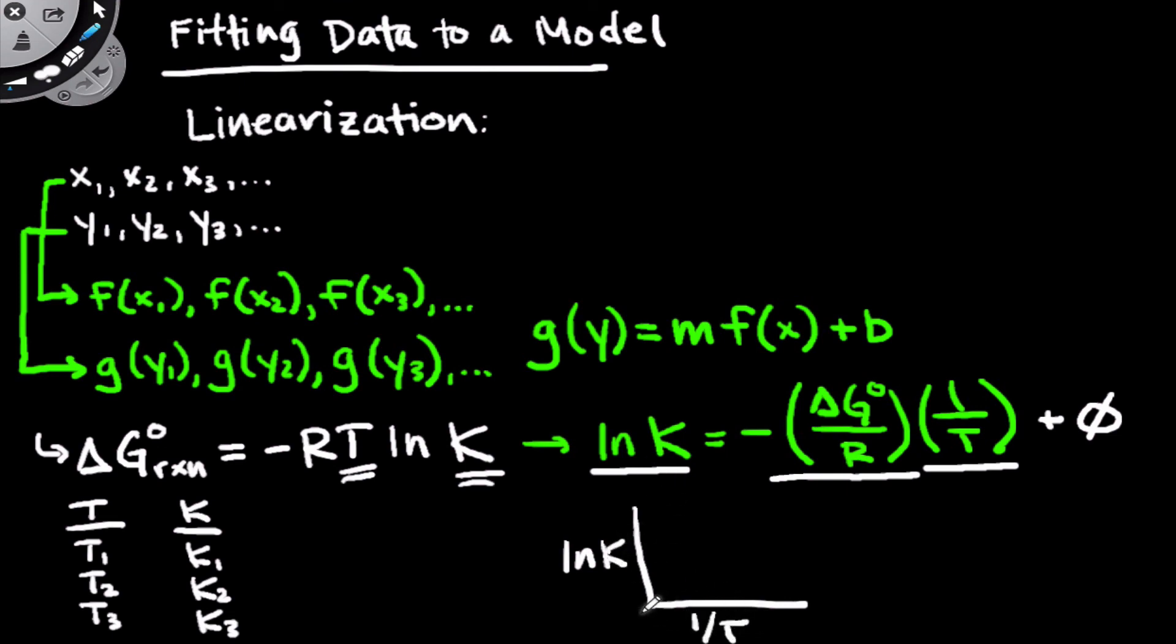So what we can then do is plot the natural log of k on the vertical or dependent axis, 1 over temperature on the horizontal or independent axis, and we should expect a line. And if our data gives a line, we can do linear regression, look at the slope of that line. The slope of that line times negative r is going to be equal to the free energy change of the reaction. So in this case, linearization was essential for us to fit this data to an equation that we could then easily pull the delta G out of.